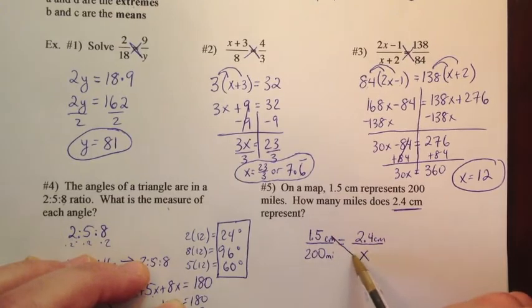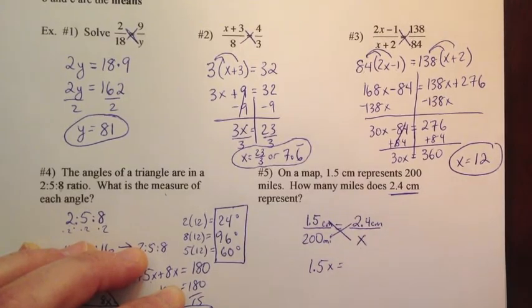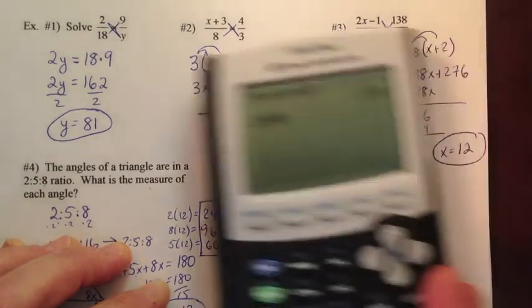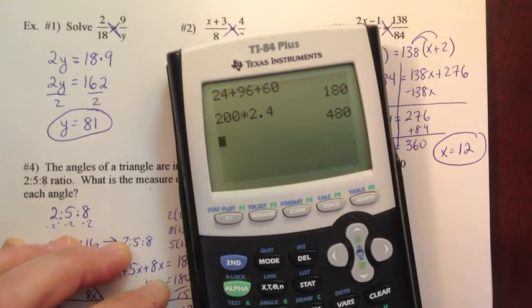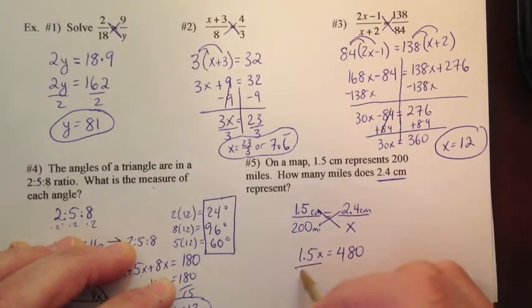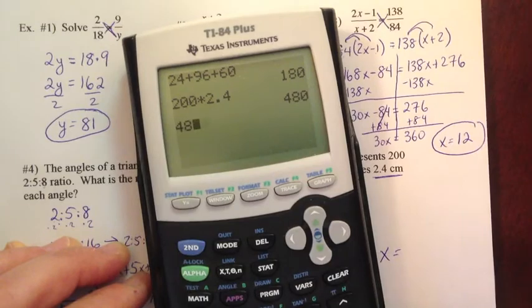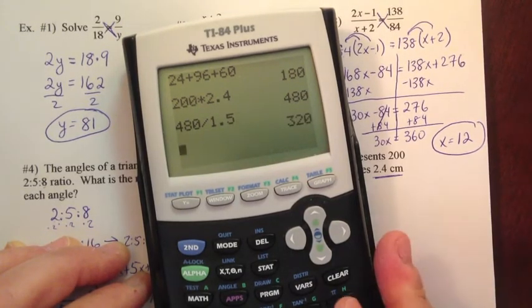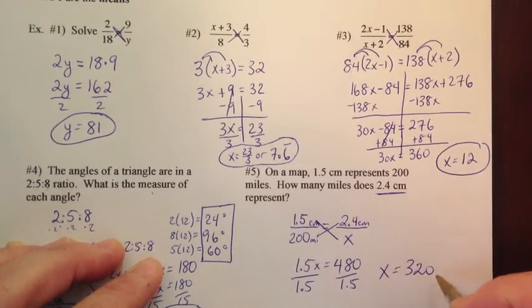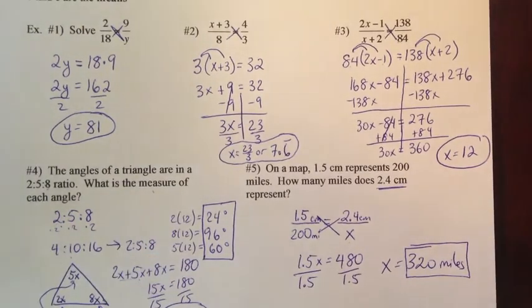And now we solve it. We'll cross multiply. So we get 1.5x equals 200 times 2.4. 200 times 2.4 gives us 480. So 1.5x equals 480. Divide by 1.5. So we get x equals 480 divided by 1.5. And we get 320. So x is equal to 320. And that's miles. I want to be consistent with that. That's 320 miles.